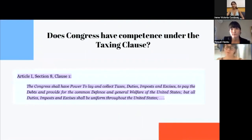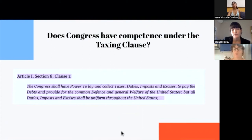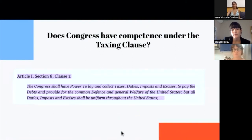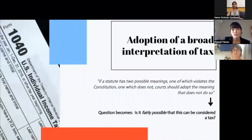Since Congress couldn't have used those two clauses as justification, the court turned to analyze whether Congress would have competence under the Taxing Clause under Article 1, which enables Congress to lay and collect taxes. For this clause to apply, the individual mandate would have to qualify as a tax. While the penalty label was fatal for the application of the Anti-Injunction Act, in the second stage of analysis what matters most is not what the letter of the law says, but rather how the mandatory contribution works in practice. The court adopted a broader interpretation, and citing the 1895 case Hooper v. California, stated that every reasonable construction must be resorted to in order to save a statute from unconstitutionality.